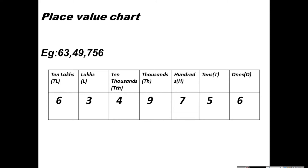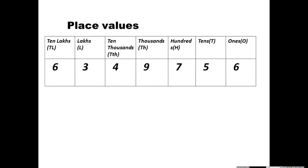So, what is the value of 6 ones? 6 ones is equal to 6. 5 tens means 50 — 5 times 10 is 50. And 7 times 100 will be 700.